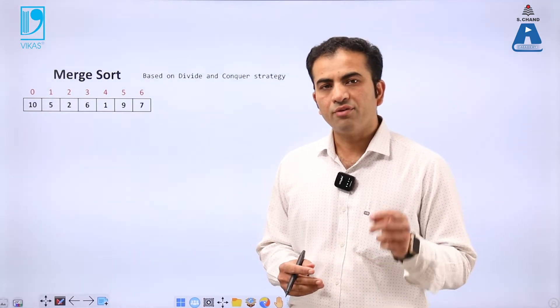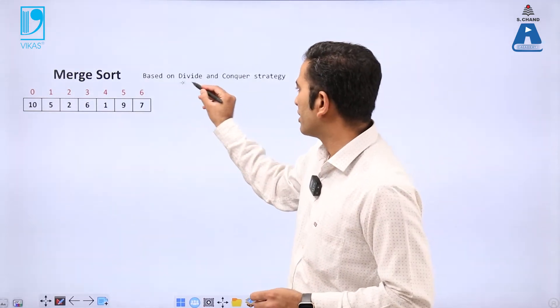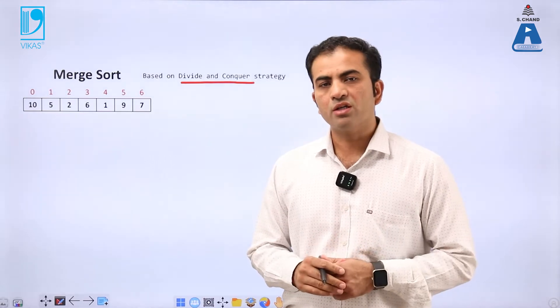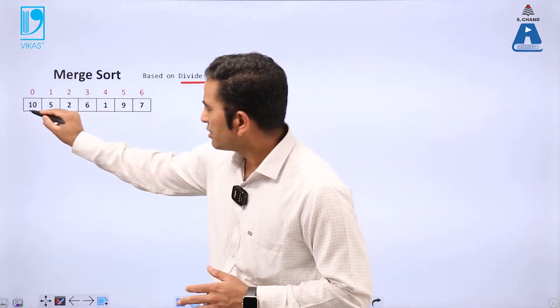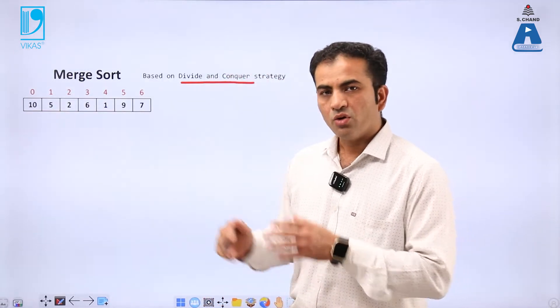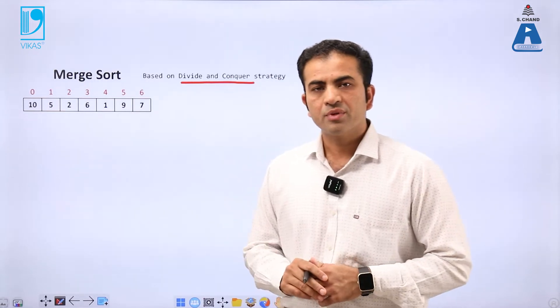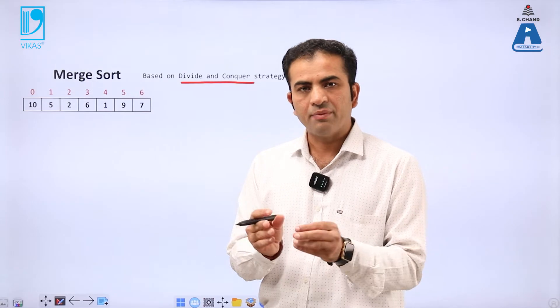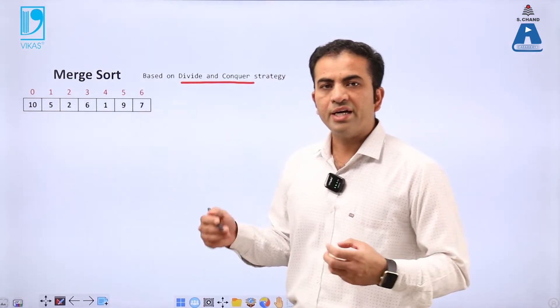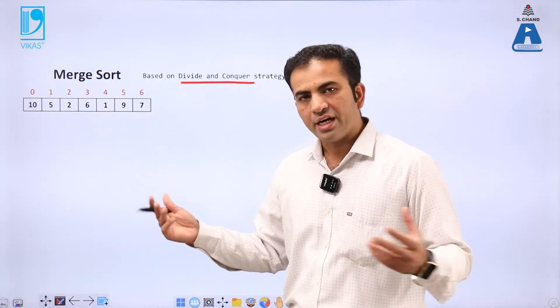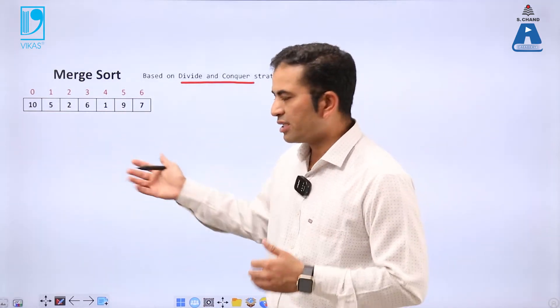Merge sort is based on the technique of divide and conquer strategy. What is the meaning of divide and conquer? We take an unsorted array, divide it until single elements remain, sort those single elements, and combine them all together to form a sorted array. This is called the divide and conquer strategy.